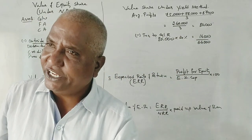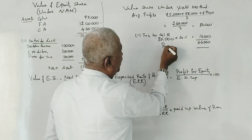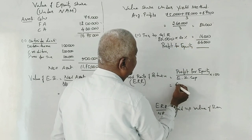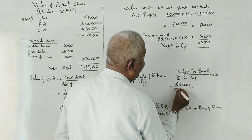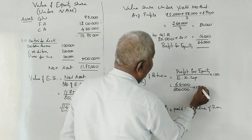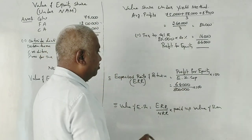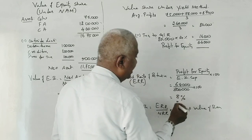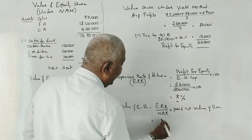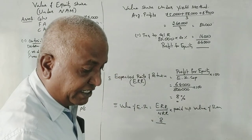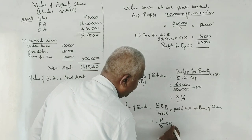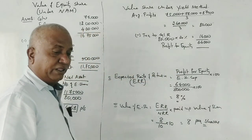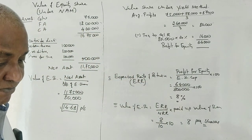Less preference share capital dividend. Profit for equity: 64,000 divided by 8,00,000 into 100 equals 8%. Expected rate of return is 8%, normal rate of return is 10%.